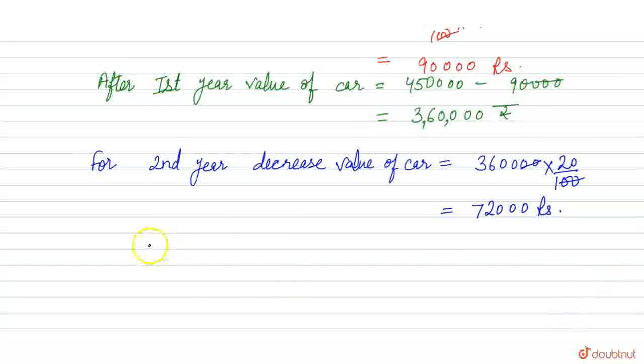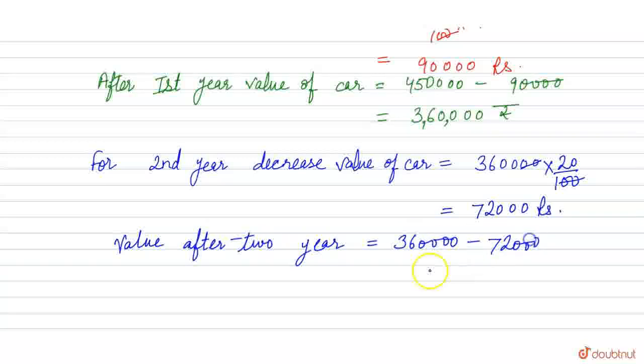Now, value after two years is equal to 360,000 minus 72,000, which equals 288,000. So this is the value of the car after two years.